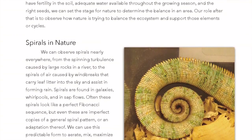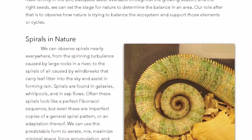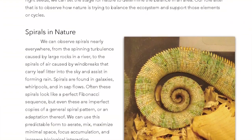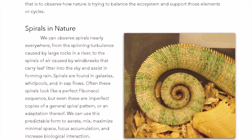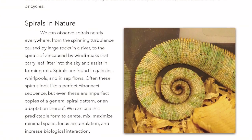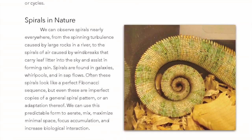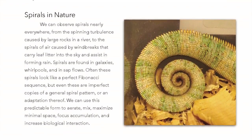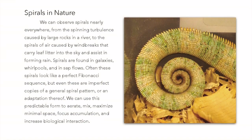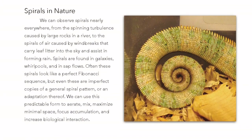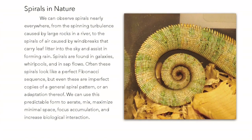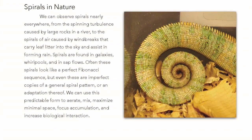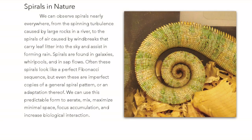Spirals in nature can be observed nearly everywhere — from the spinning turbulence caused by large rocks in a river, to the spirals of air caused by windbreaks that carry leaf litter into the sky and assist in forming rain. Spirals are found in galaxies, whirlpools, and saplows. Often these spirals look like a perfect Fibonacci sequence, but even these are imperfect copies of a general spiral pattern. We can use this predictable form to aerate, mix, maximize minimal space, focus accumulation, and increase biological interaction.